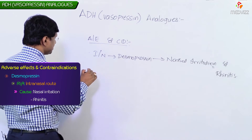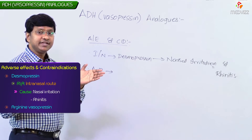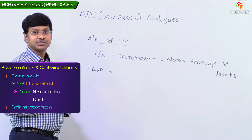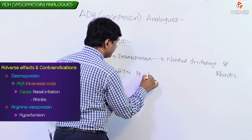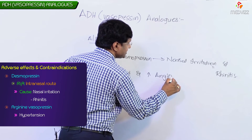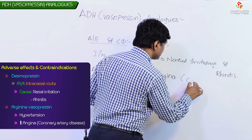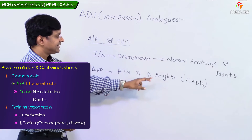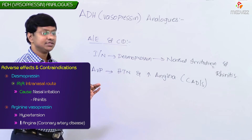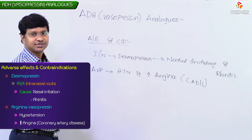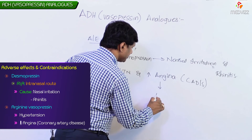Arginine vasopressin increases blood pressure by causing vasoconstriction, so it can cause hypertension and precipitate angina in patients with coronary artery disease. In patients who are already hypertensive, these drugs will further increase blood pressure. Therefore, these drugs should be used with caution or are contraindicated in hypertensive patients and those with ischemic heart disease.